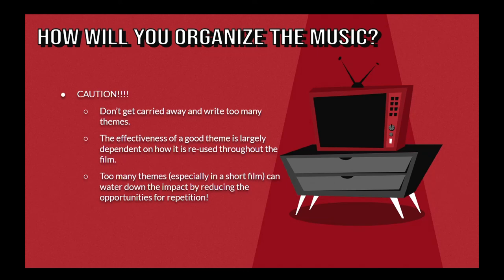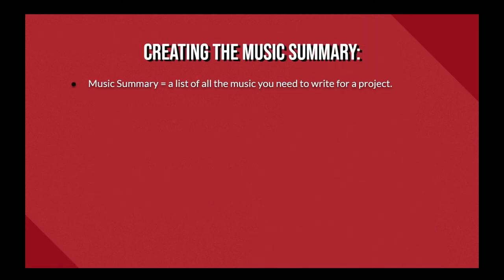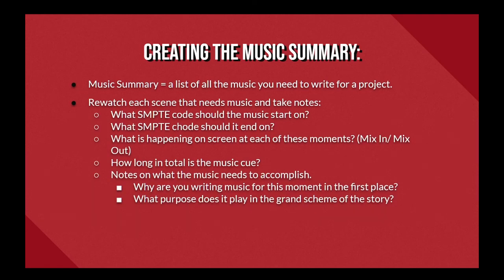Now, from here, we can start putting together our music summary, which is a brief list of all the music that you will need to write for the film. Go through each scene that you've marked as needing music, and as you re-watch the scenes, take notes on the following: What SMPTE code should the music start on? What SMPTE code should it end on? What is happening on screen at each of these moments? How long in total is the music cue? And of course, take notes on what the music needs to accomplish — why are you writing music for this moment in the first place, and what purpose does it play in the grand scheme of the story? You can also include tentative names for each cue if you'd like, but that's optional.